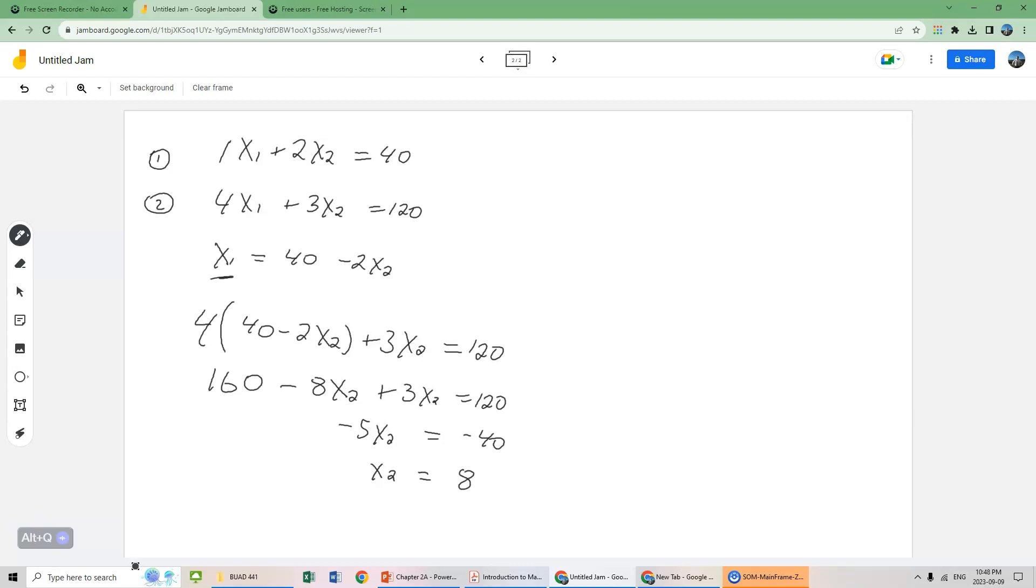So we know what x2 equals. We can then put that back into our first equation, which was 1x1 plus 2x2, which x2 equals 8. And that equals 40. So 1x1 plus 16 equals 40. x1 equals 40 minus 16, or 24.